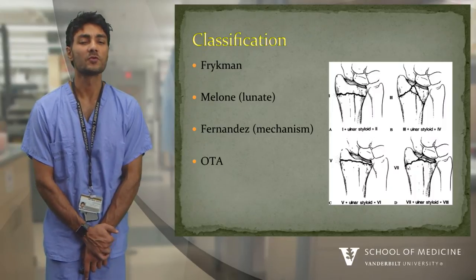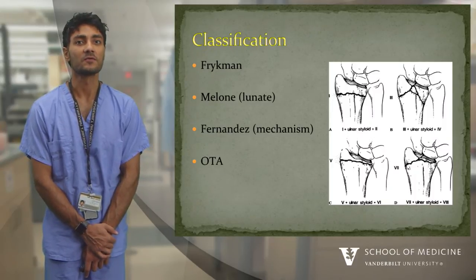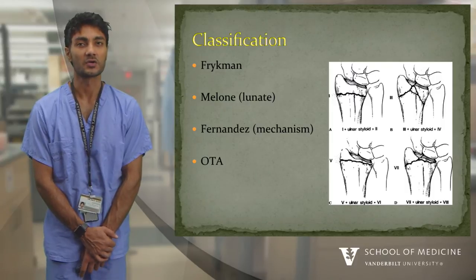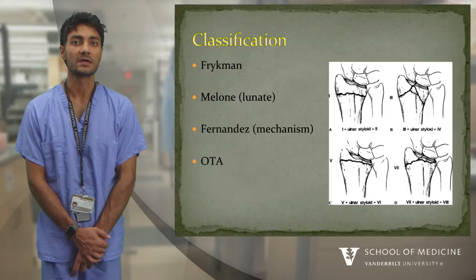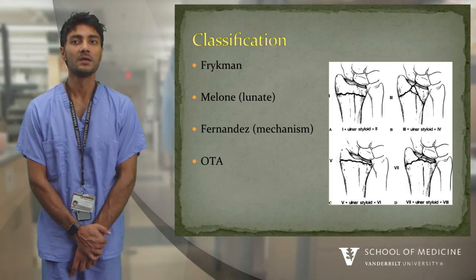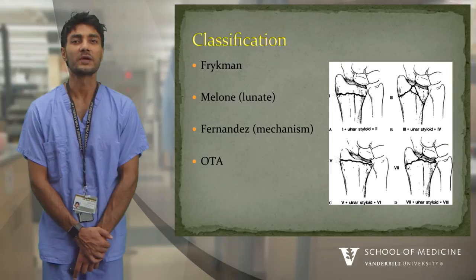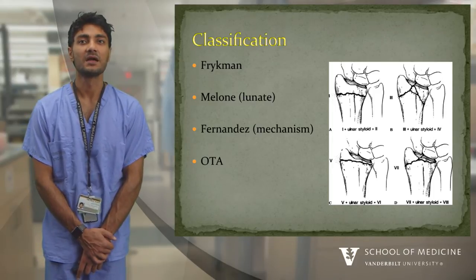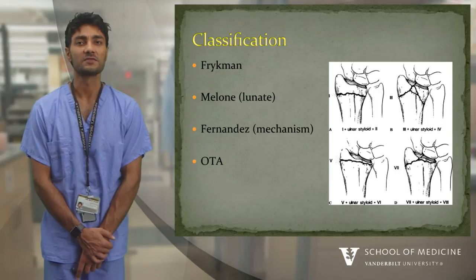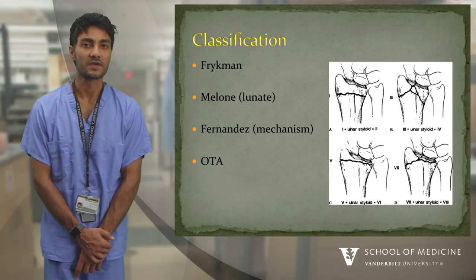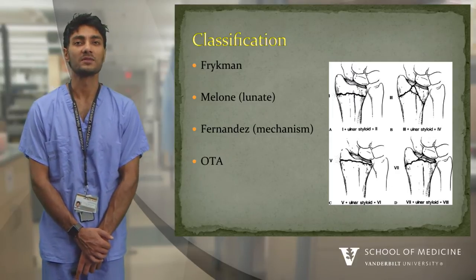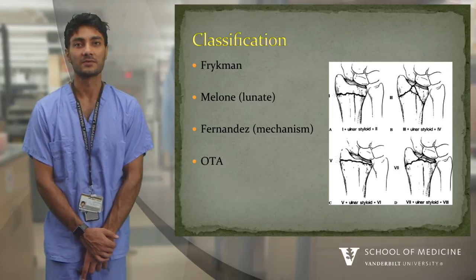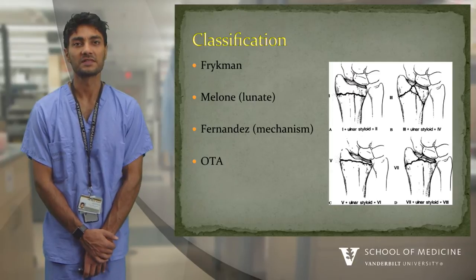Classification systems are helpful when they inform treatment and prognosis. Unfortunately, for the distal radius, no great system has caught on — Anderson et al. showed poor inter- and intra-observer reliability. The OTA classification is useful for research purposes, but in the distal radius world you can get away with simply describing the fracture pattern.